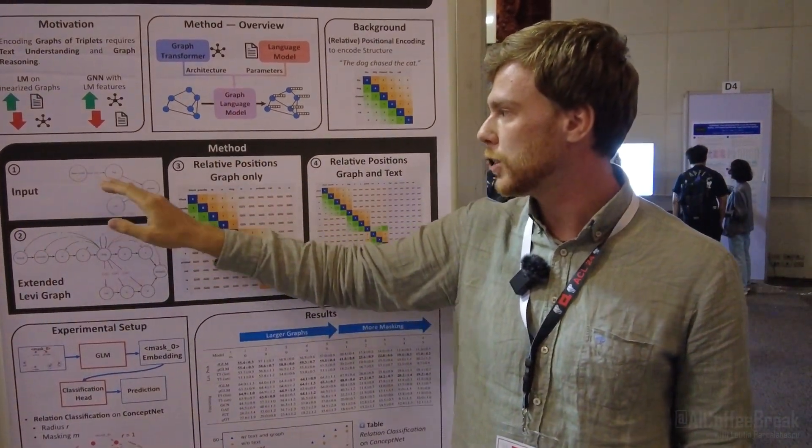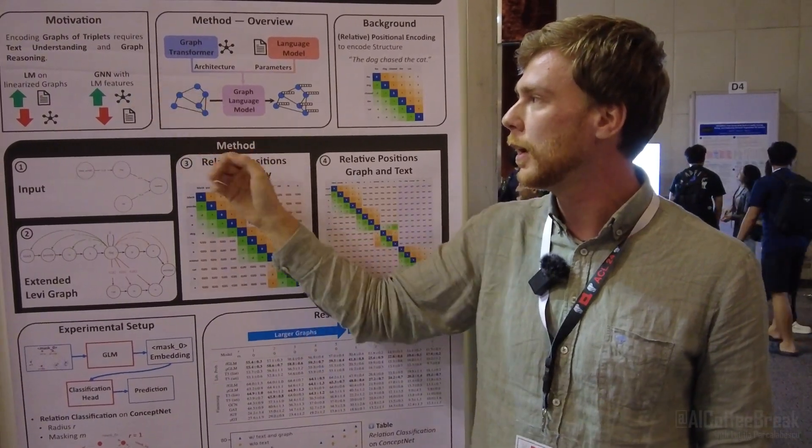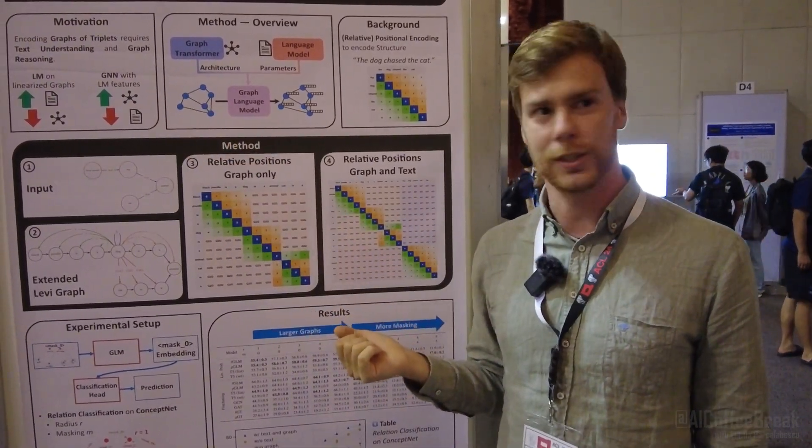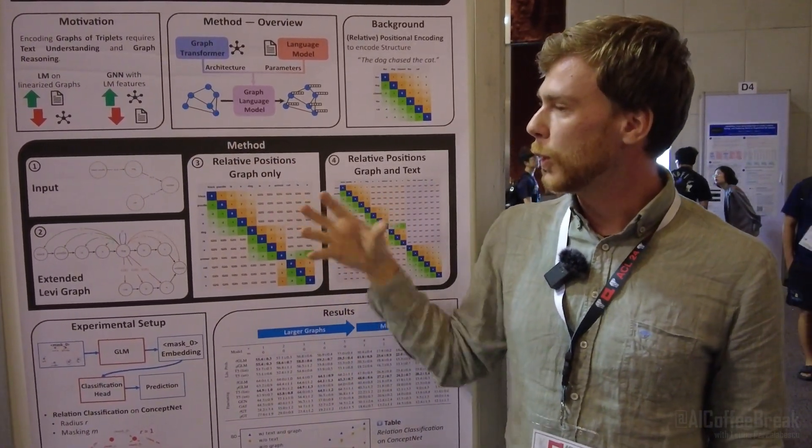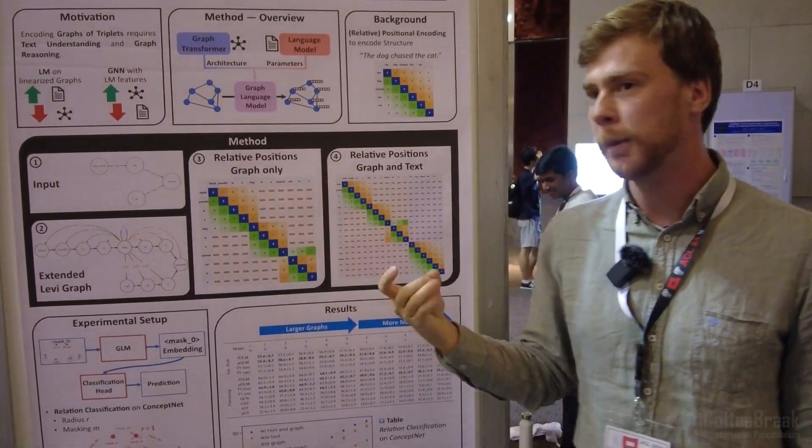If people want to use the graph structure more, they commonly use language models to first encode the nodes and potentially the edges, and then use a graph neural network, which is good for graph reasoning but the language understanding is kind of lost in this process. So we thought if we have one model which can do both the text understanding as well as the graph reasoning, it might be better for encoding such graphs.